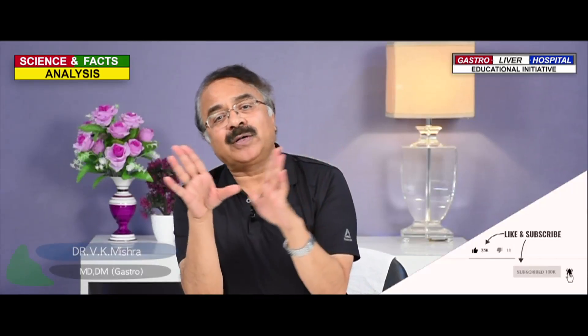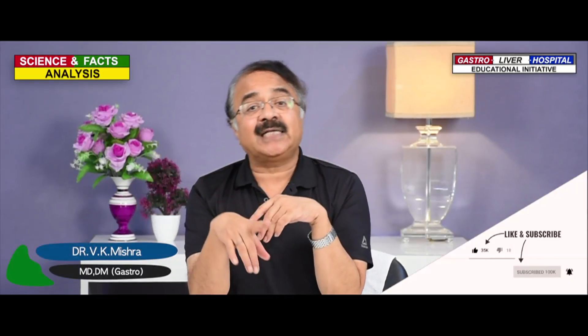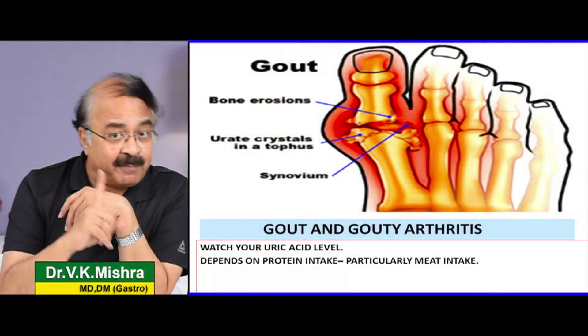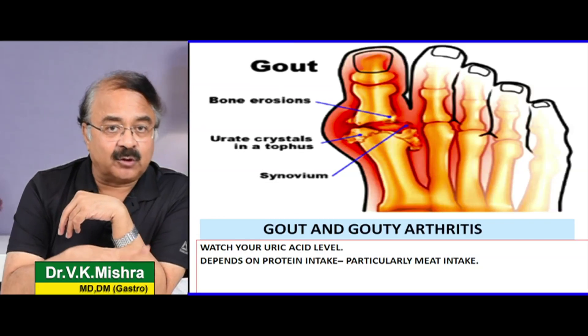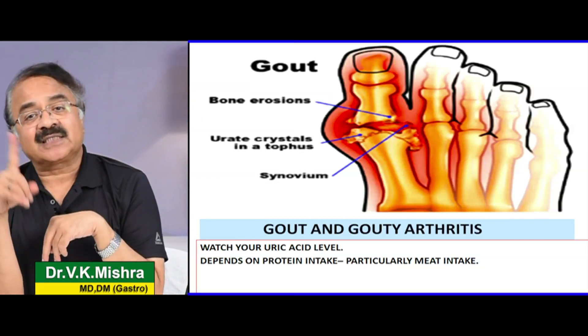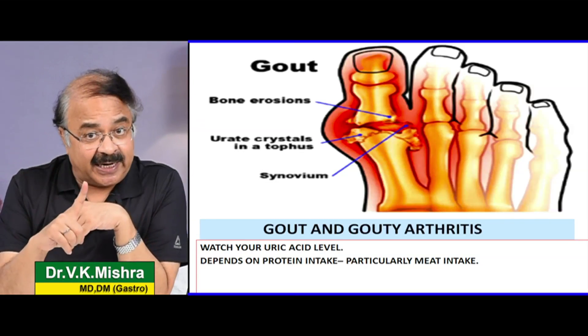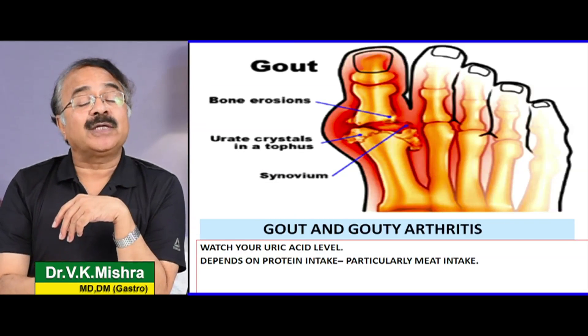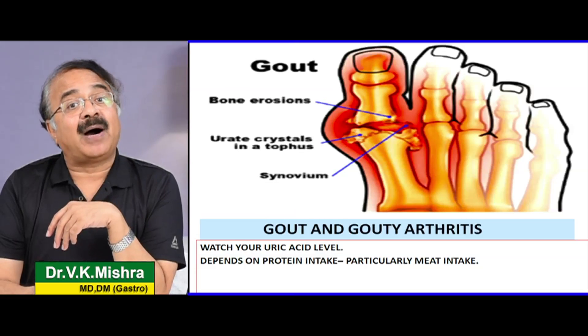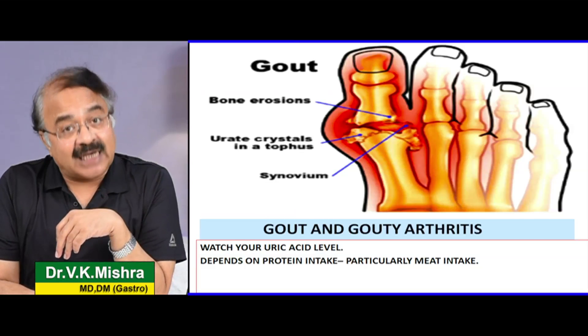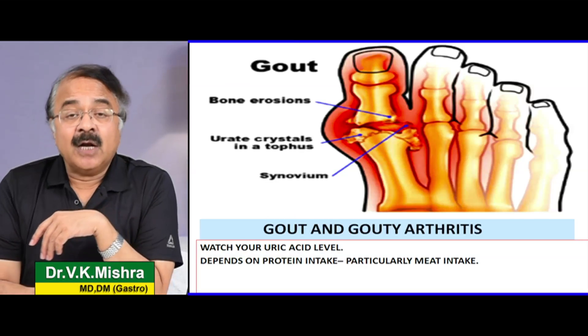Gout और gouty arthritis के बारे में — gout और gouty arthritis uric acid और purines के चलते होता है, high protein diet के चलते होता है। लेकिन science मानती है कि जिन्हें obesity है उन्हें gouty arthritis होने का risk और संभावना हमेशा ज़्यादा होती है।